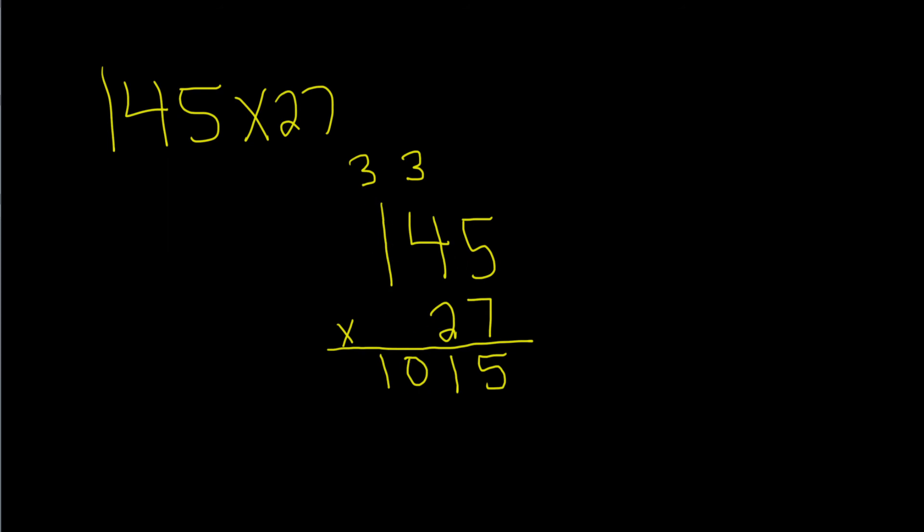Then you go to the next number. I'm going to cross these out because we're going to carry new things. 2 times 5 is 10. You write down the ones place below the 2 like this. 2 times 5 is 10, we carry the 1.